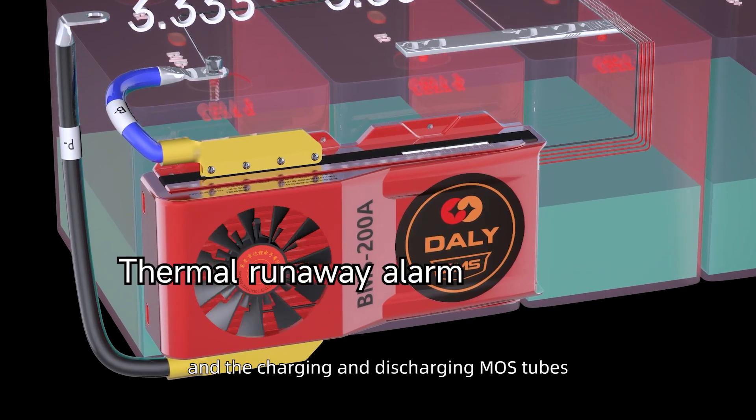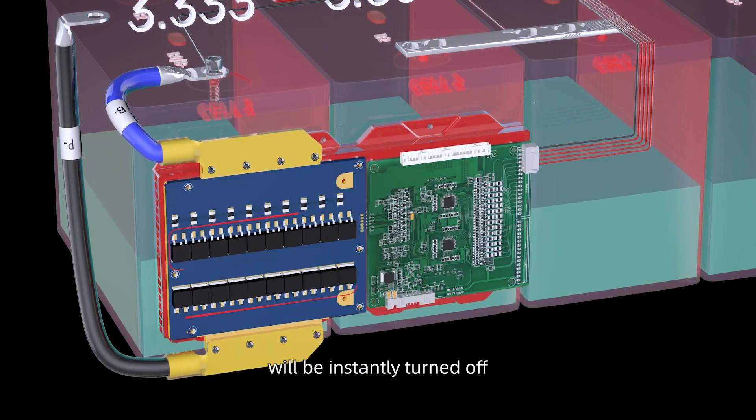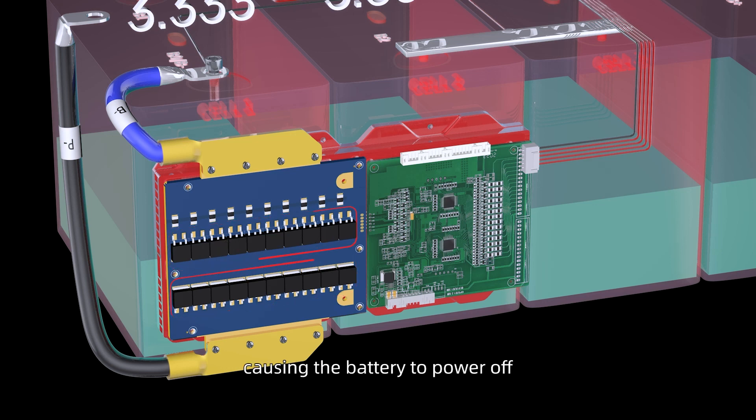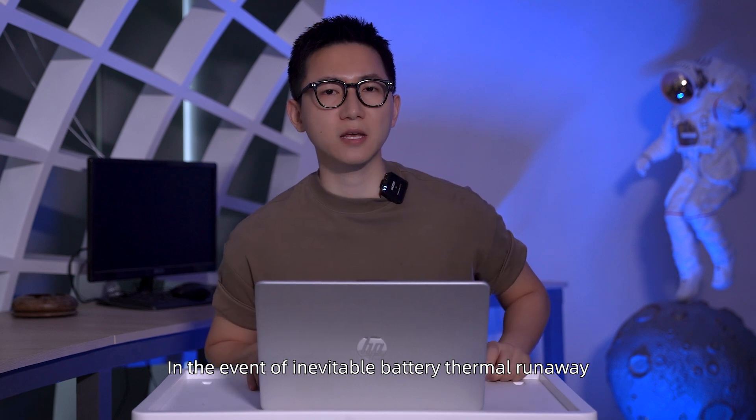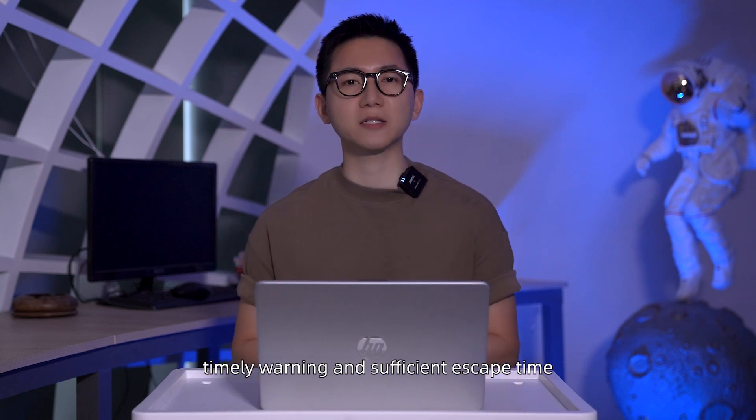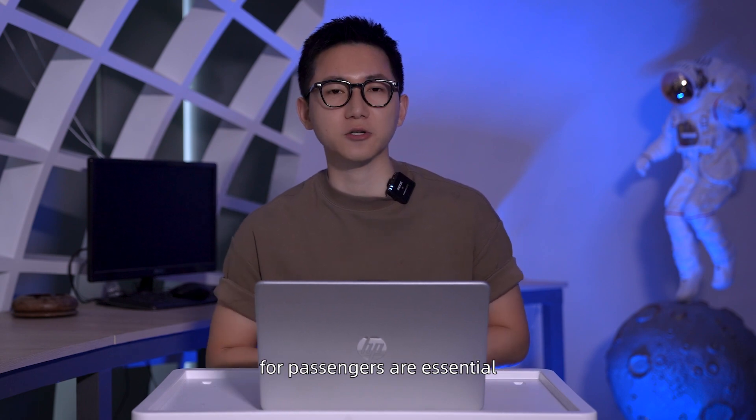a thermal runaway alarm will be triggered and the charging and discharge mode tubes will be instantly turned off, causing the battery to power off, thereby preventing further danger from occurring. In the event of the inevitable battery thermal runaway, a timely warning and sufficient escape time for passengers are essential.